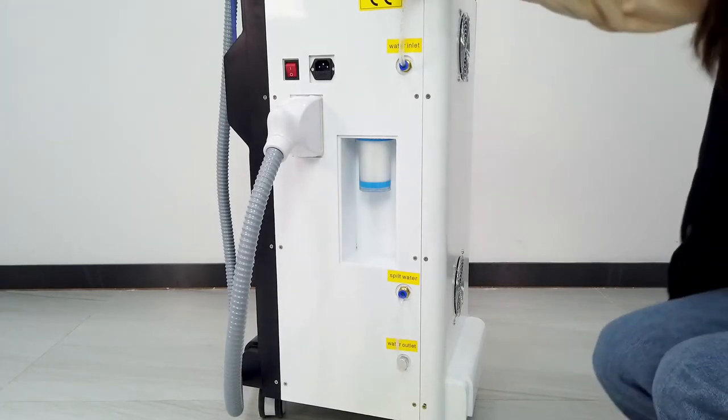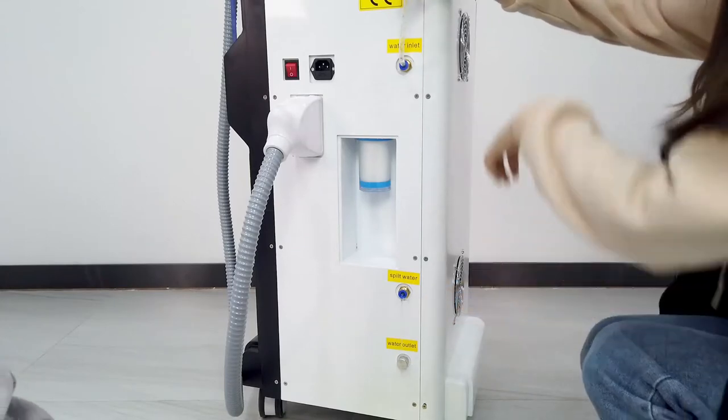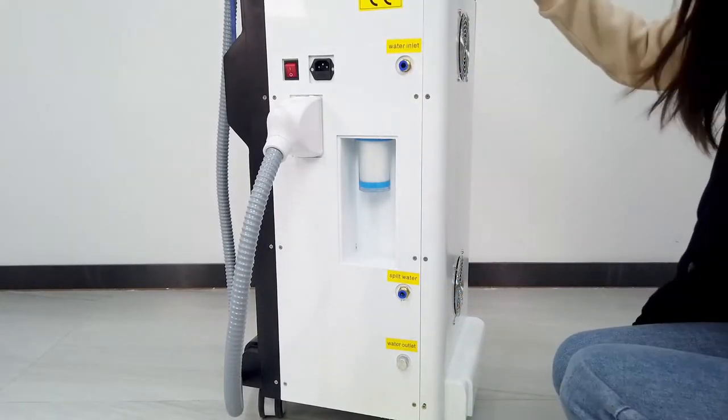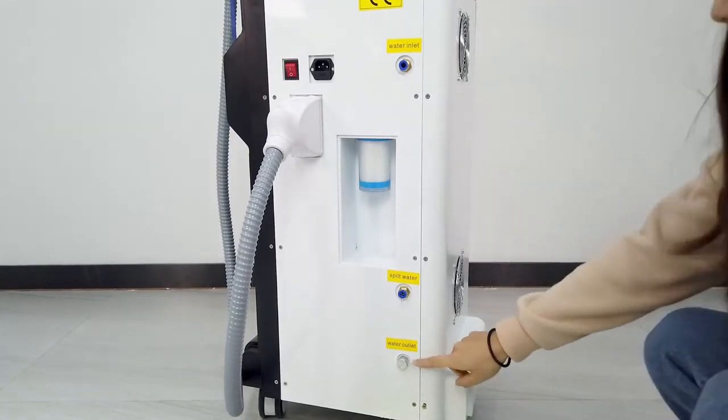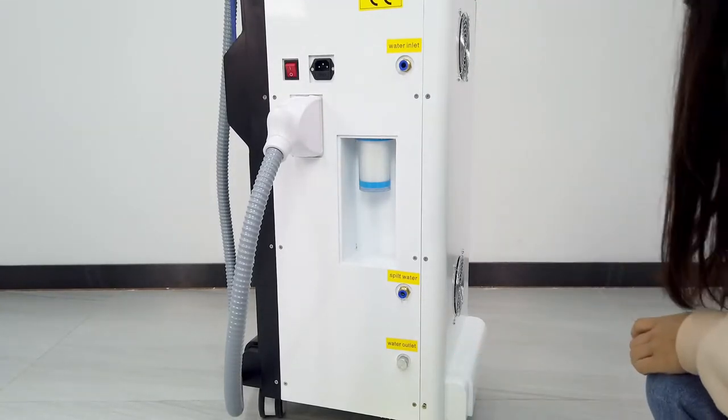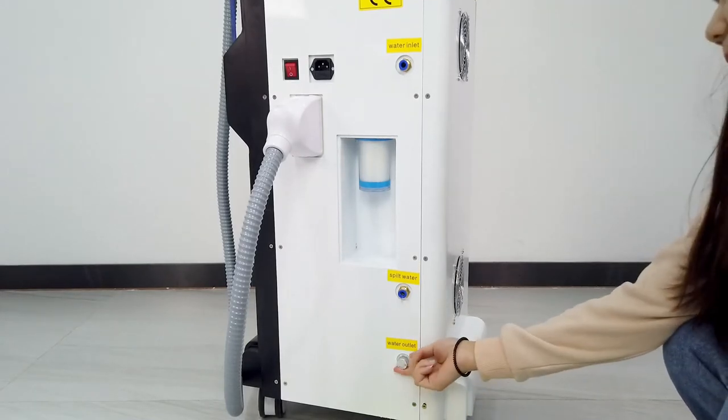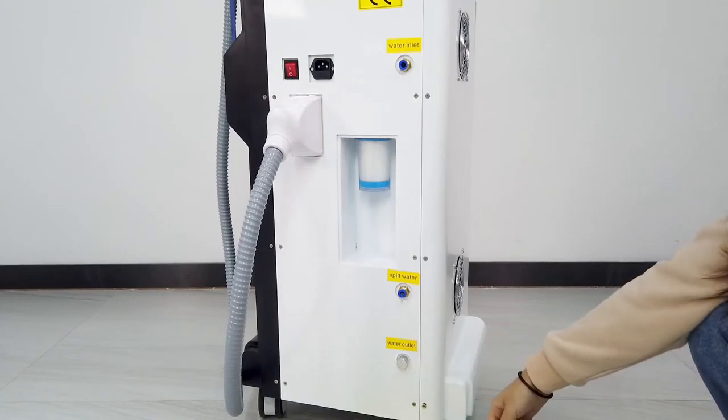When we see the water level in the viewing window, we know the fuel is filling. When the water is full, we can stop adding water and press the left button. For the water outlet, normally we need to change the water every month. When we want to change the water, we need to open it and let the water out from the machine, and then add new water again.